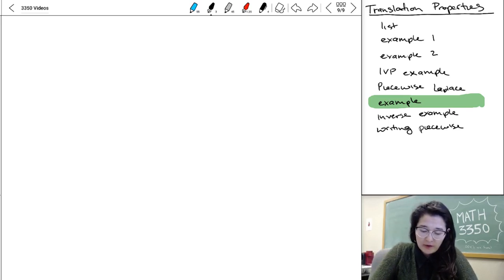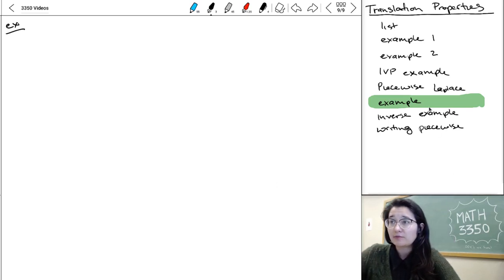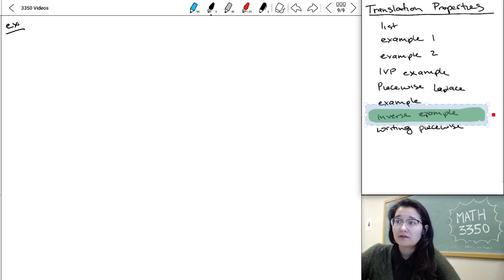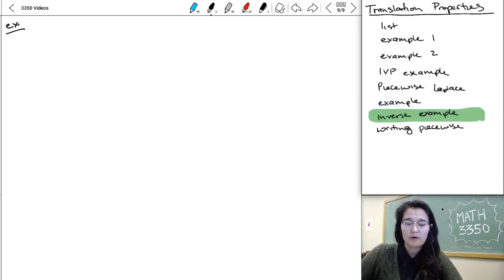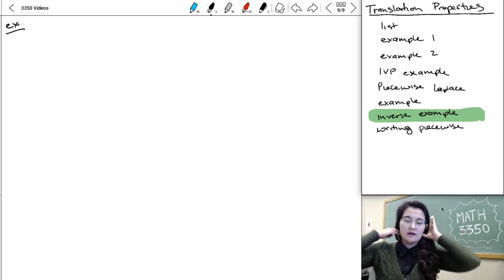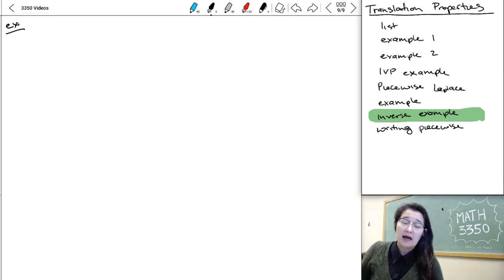So let's go ahead and do an example where we use the inverse property where we have to undo one of those piecewise problems where we have the e to minus something times capital F.